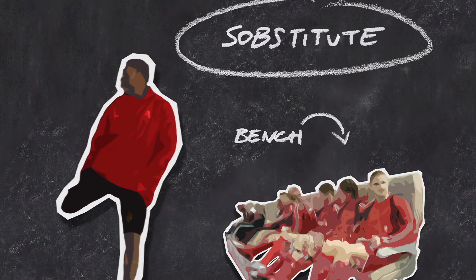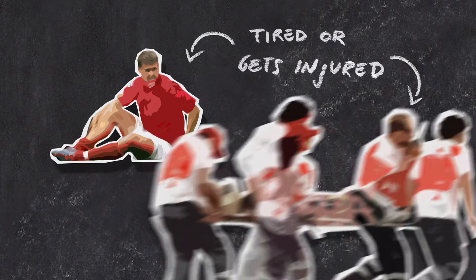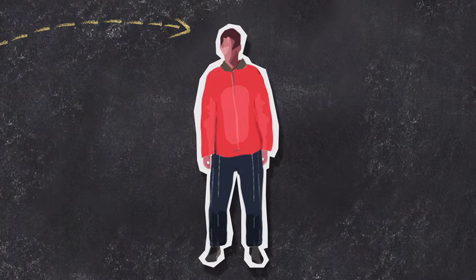Today, we're going to talk about substitutes. The substitute sits on the bench until one of his teammates feels tired or gets injured. He can't wait to start playing, but he has to wear a tracksuit over his shirt and shorts.